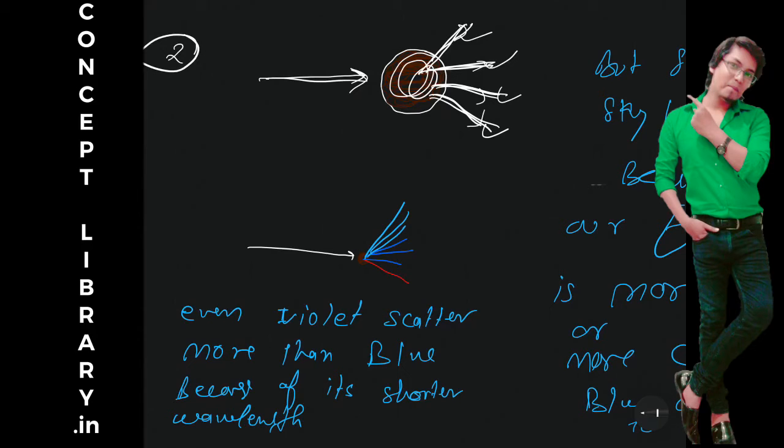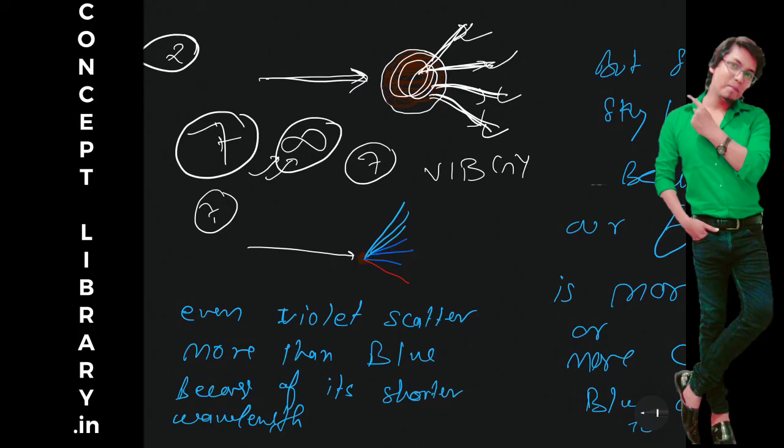One thing you keep in mind - in our sunlight we don't have seven colors, we have infinite number of colors, but for human eye it is easy to catch only seven colors. So those seven colors we remember as VIBGYOR, right, violet indigo blue green yellow orange and red.